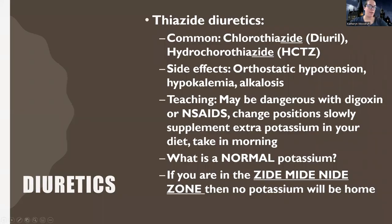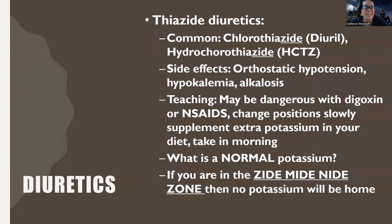There are potassium wasting diuretics and potassium sparing diuretics. The two potassium wasting types are thiazide diuretics and loop diuretics. Thiazide diuretics all end in 'thiazide' or 'zide.' A mnemonic: if you're in the zidemide zone, then no potassium will be home.